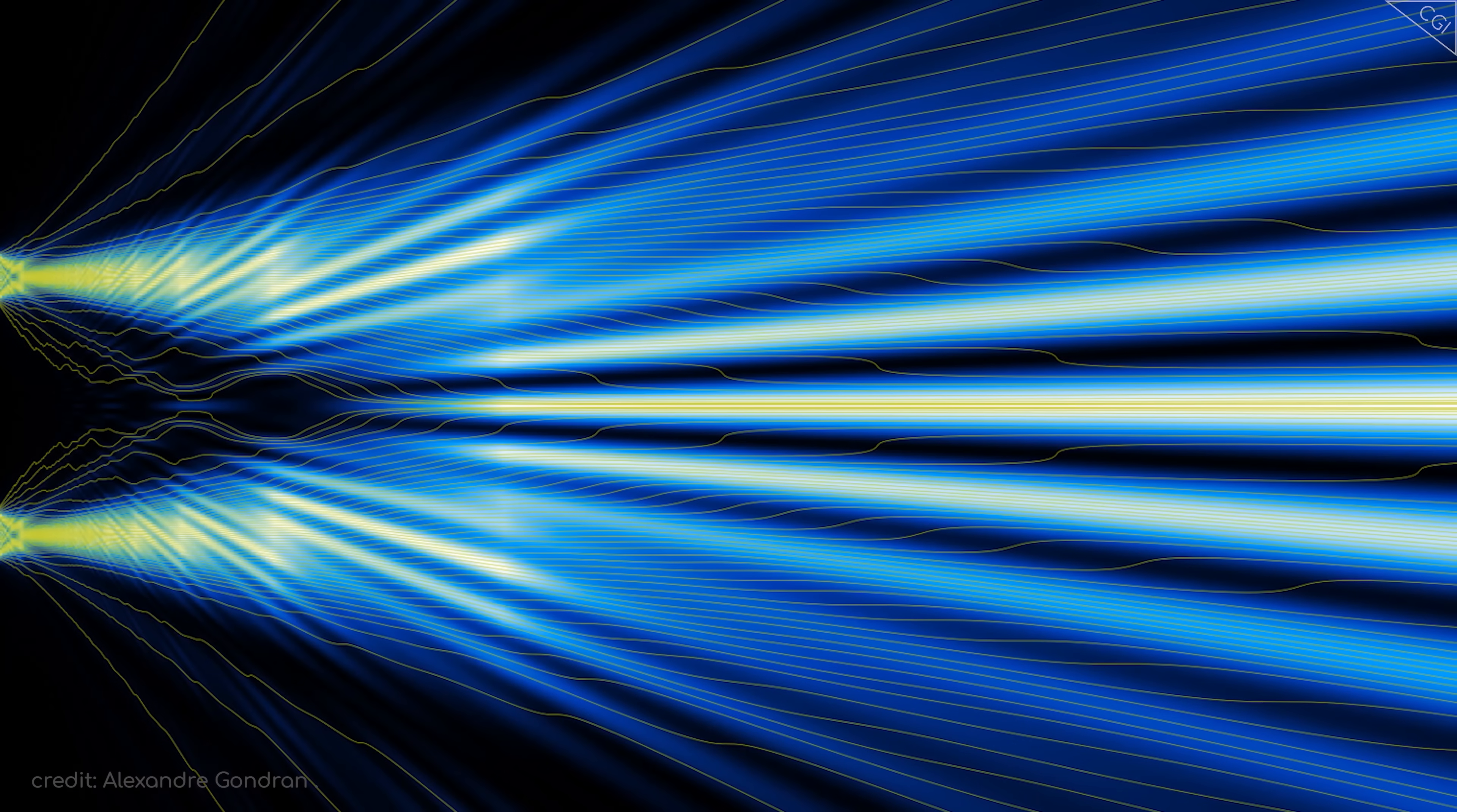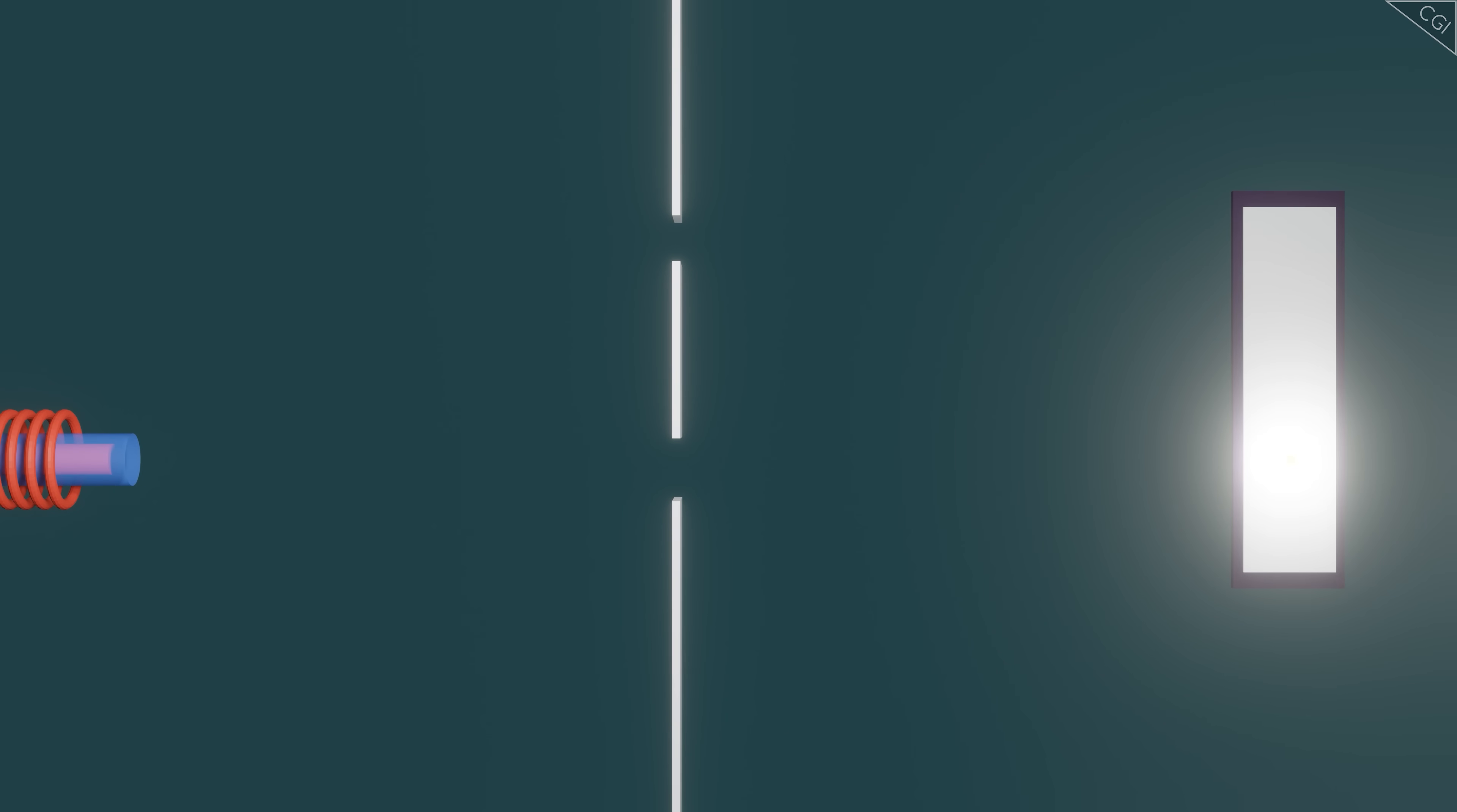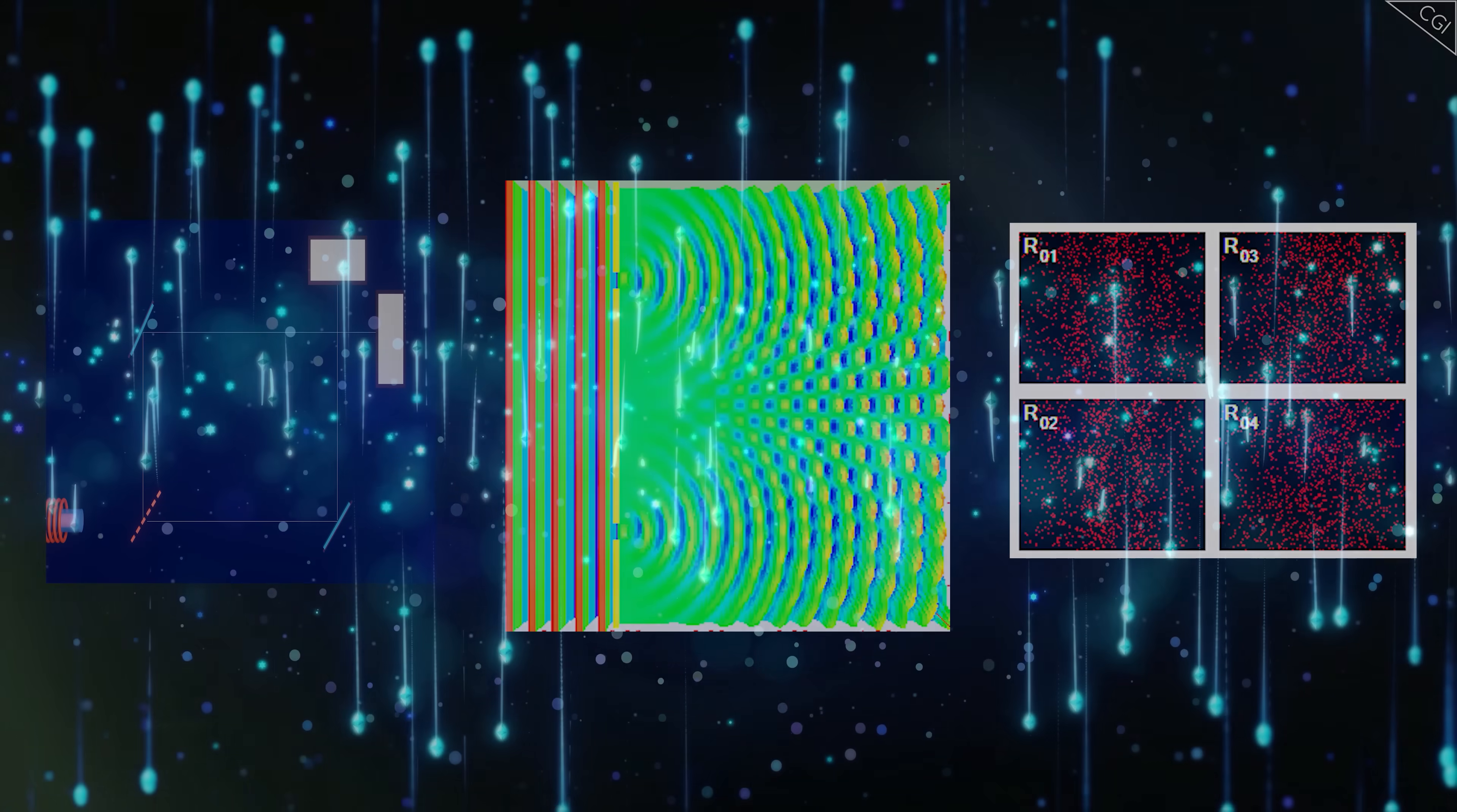But most baffling of all, it seemed to change which it behaved like depending on whether you were observing its path through space or not. If it could go through multiple paths, and no one was watching to see which it did go through, light simply went through both, like a wave. But observed, it went through just the one, like a particle. This result was baffling enough, and deserves a video on its own, but in 2006 a number of scientists took it one step further by asking an interesting question. What would happen if you tried to observe the light AFTER it had to pick a path?